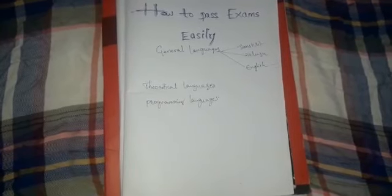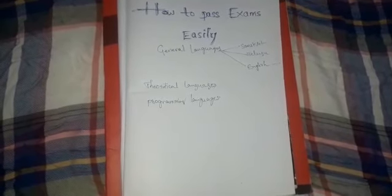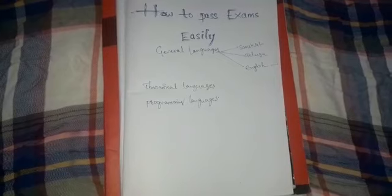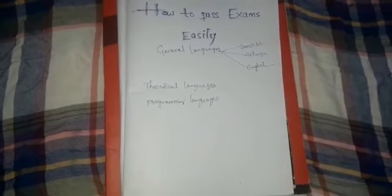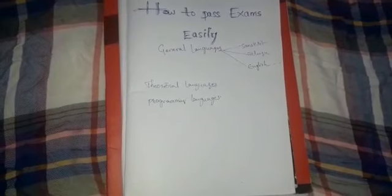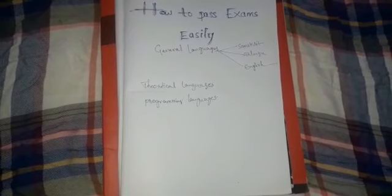General languages include Sanskrit, Telugu, English, and so on. Theoretical subjects include software engineering, software project management, software testing methodologies, IPR (intellectual property rights), and so on. Programming languages include C, C++, Java, HTML, and so on.